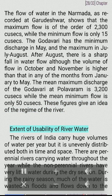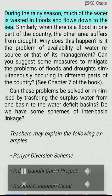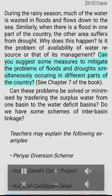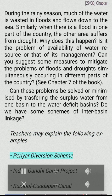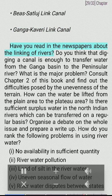The rivers of India carry huge volumes of water per year, but it is unevenly distributed both in time and space. There are perennial rivers carrying water throughout the year, while non-perennial rivers have very little water during the dry season. During the rainy season, much of the water is wasted in floods. Can these problems be solved by transferring surplus water from one basin to water-deficit basins? Some schemes of inter-basin linkage include the Periyar Diversion Scheme, the Indira Gandhi Canal Project, the Kurnool-Kadapa Canal, the Sutlej Link Canal, and the Ganga-Kaveri Link Canal.